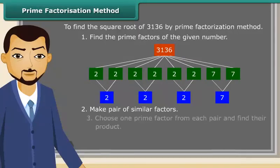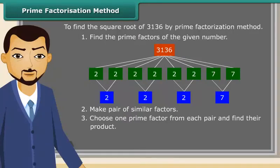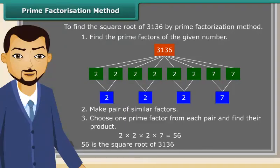After that, choose one prime factor from each pair and find their product. So the product thus obtained is the square root of the given number.